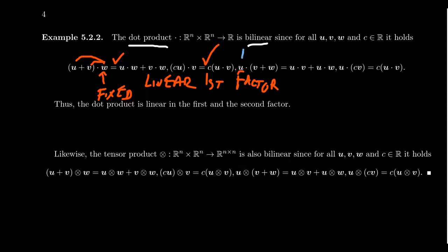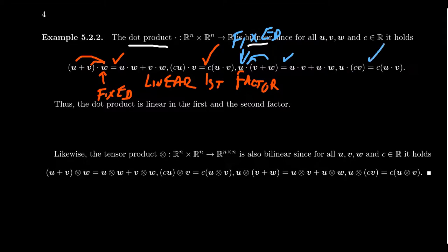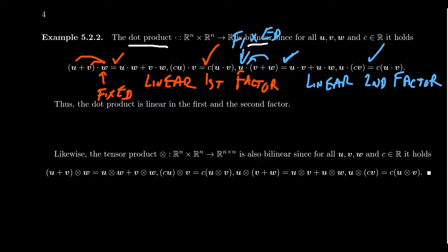If we fix the first coordinate u, then distributing over a sum gives u·(v + w) = u·v + u·w, so addition is preserved in the second factor. And u·(cv) = c(u·v), so the dot product preserves scalar multiplication in the second factor as well. Since it's linear in both the first and the second factor, we say it's a bilinear map. This is the dot product on the real numbers.